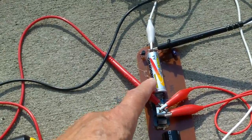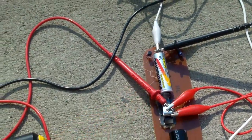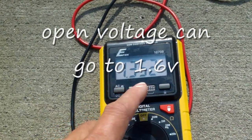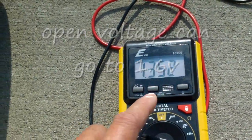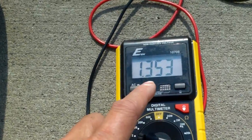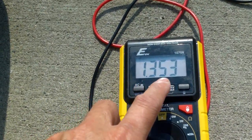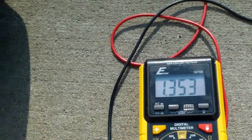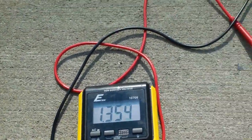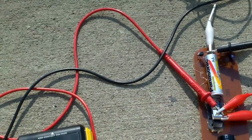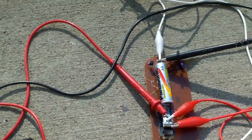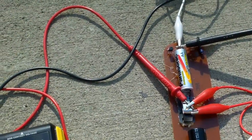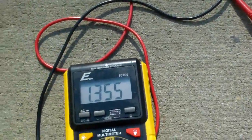It started off as 1.28 volts and it's charging it up to 1.35 volts now. It's going up, but it's going up very slowly, I think partly because of the resistance of the battery. When it goes up to maybe 1.4 or 1.45, that's probably the highest it can go.